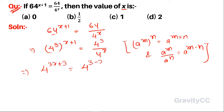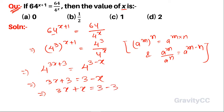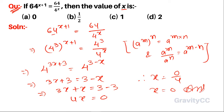Here the bases are the same, so 3x plus 3 equals 3 minus x. Therefore 3x plus x equals 3 minus 3, so 4x equals 0, and therefore x equals 0 upon 4 equals 0. So option A is the correct answer.